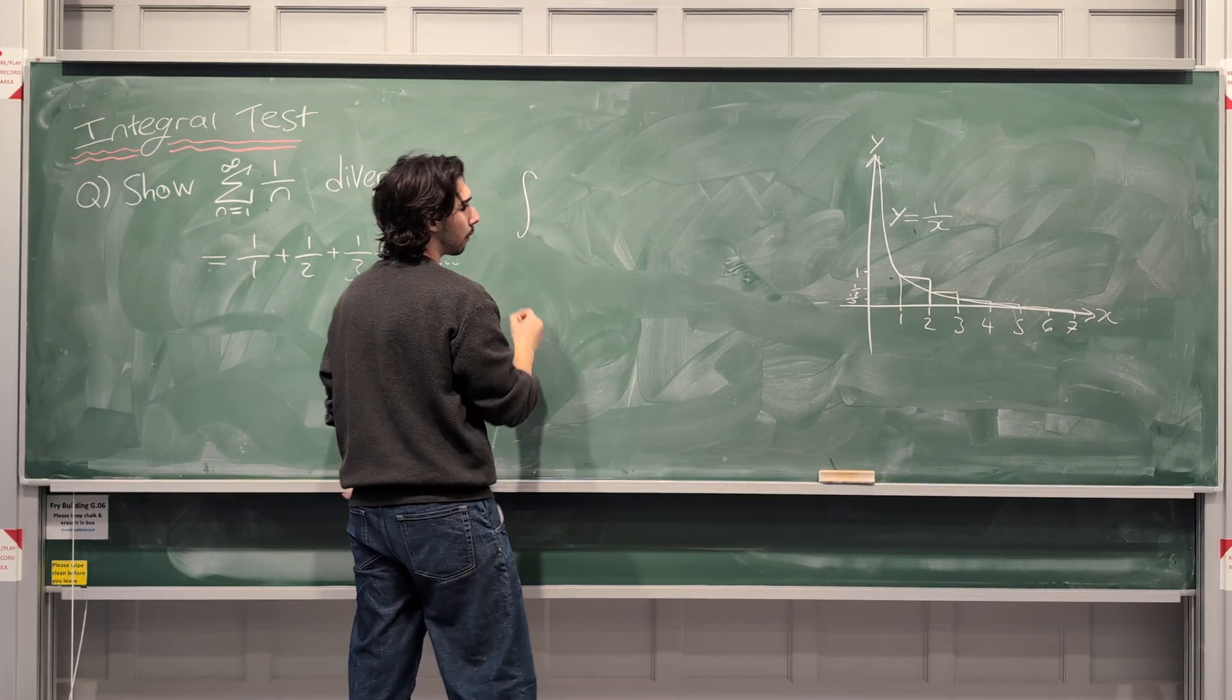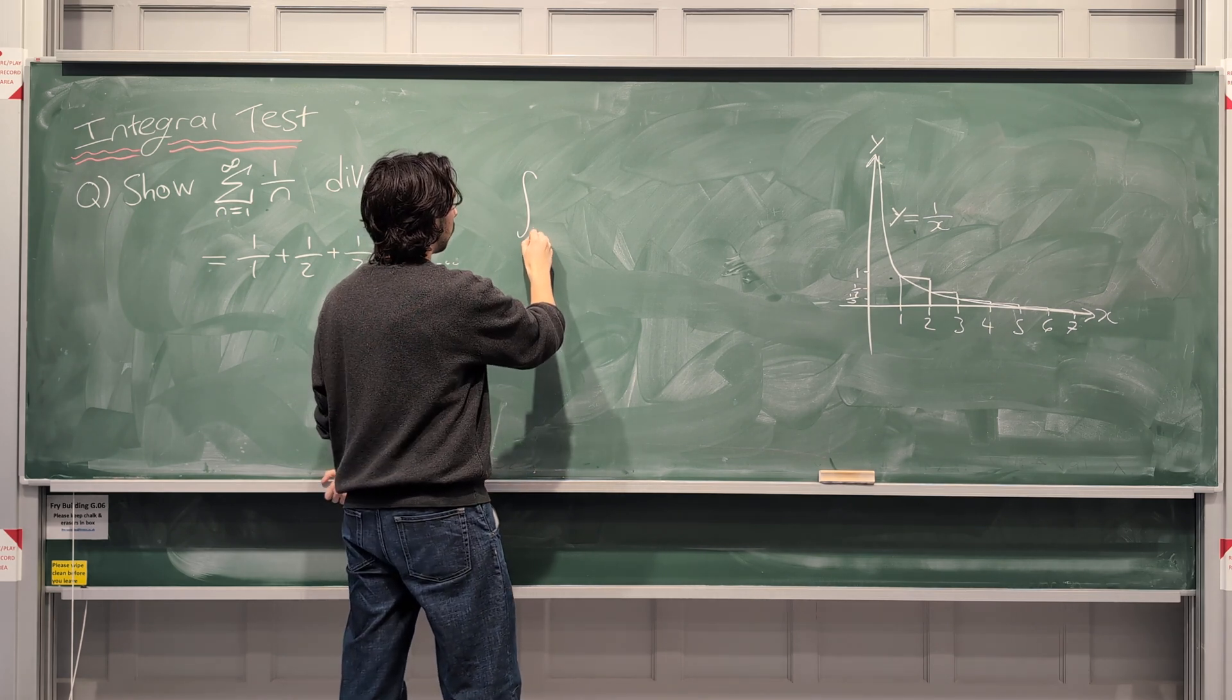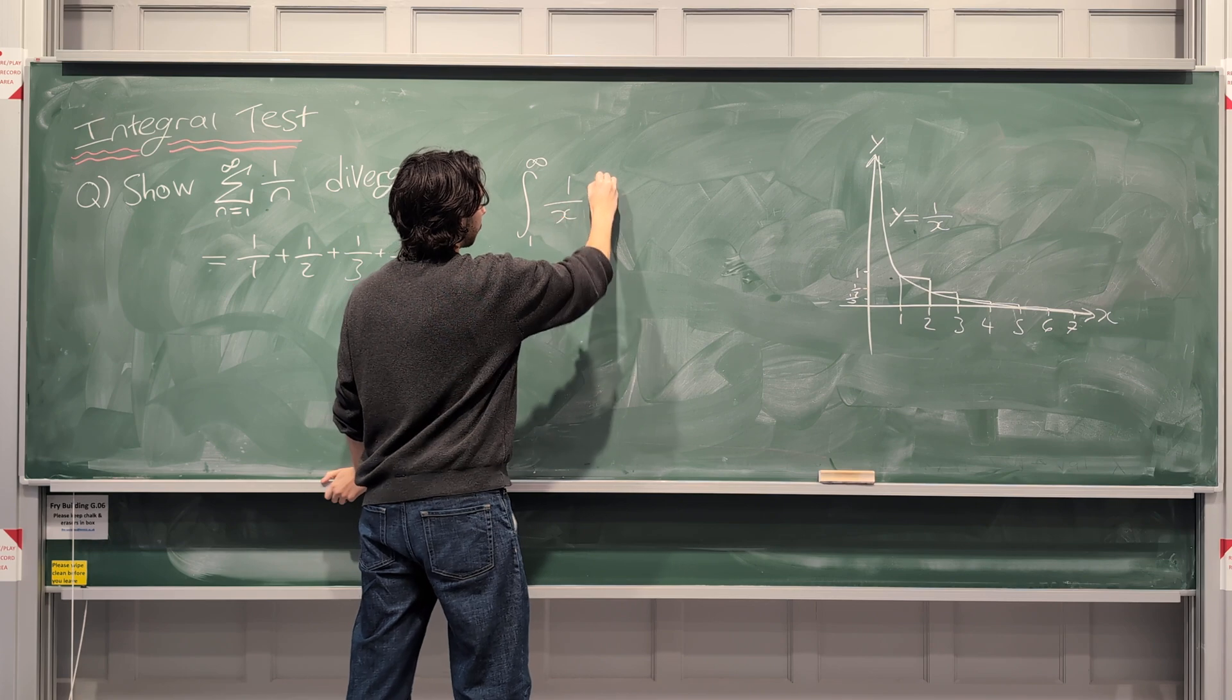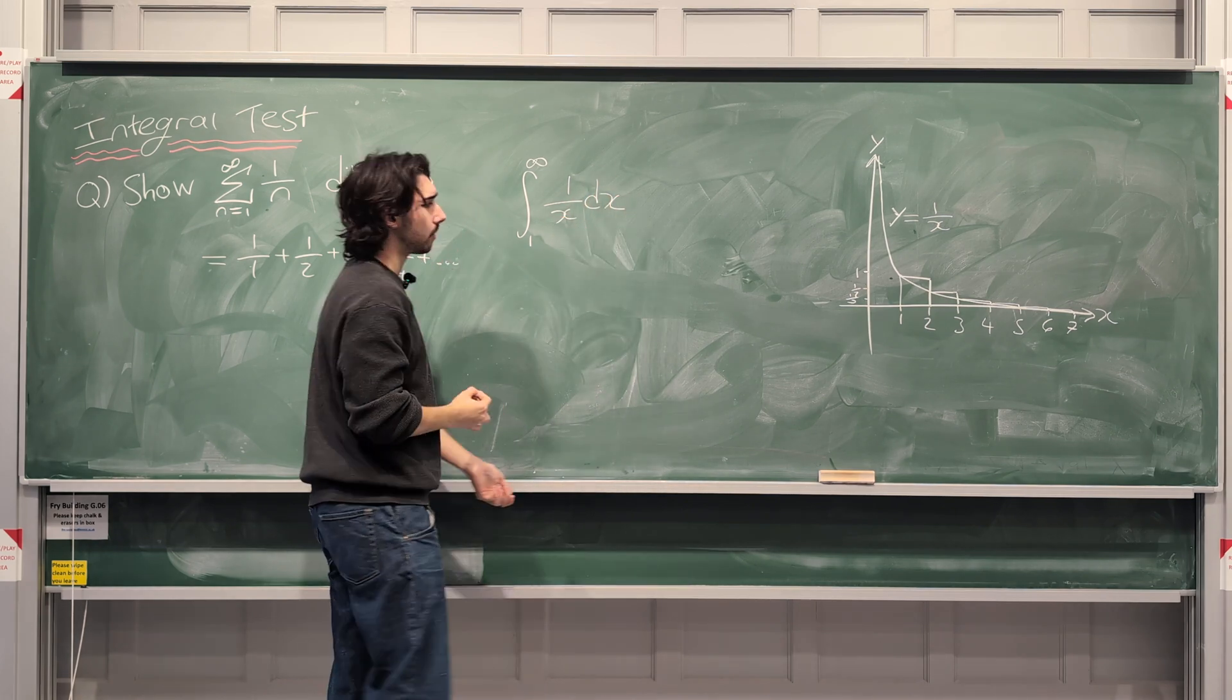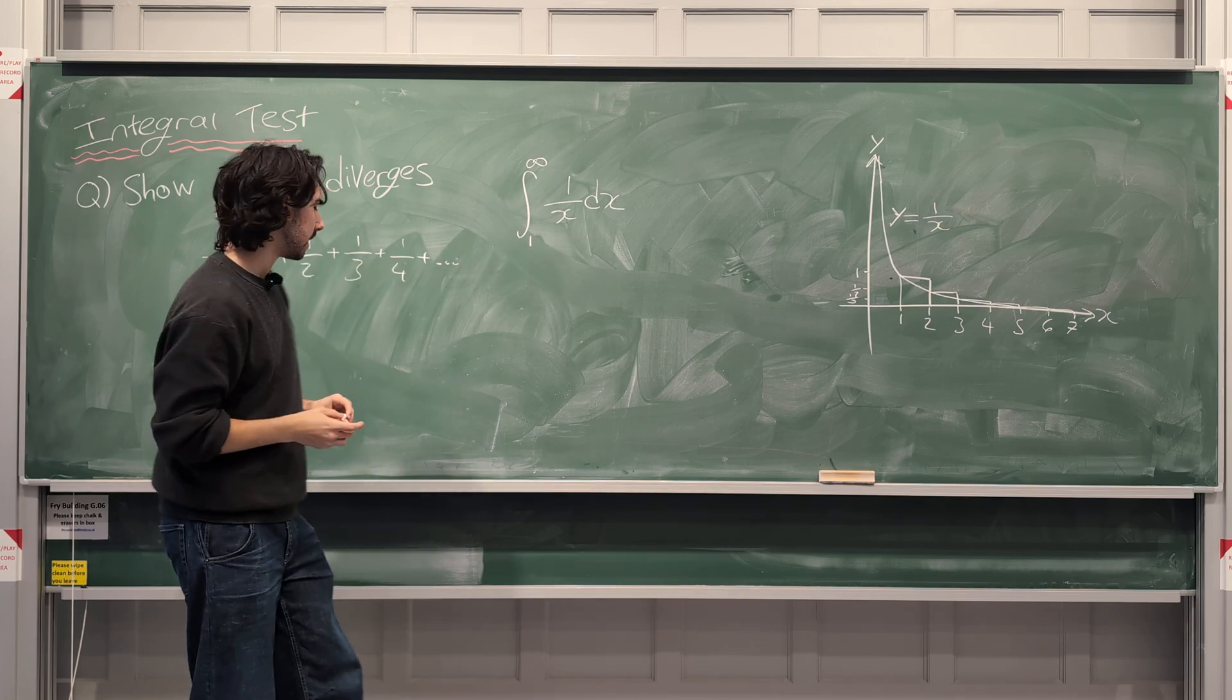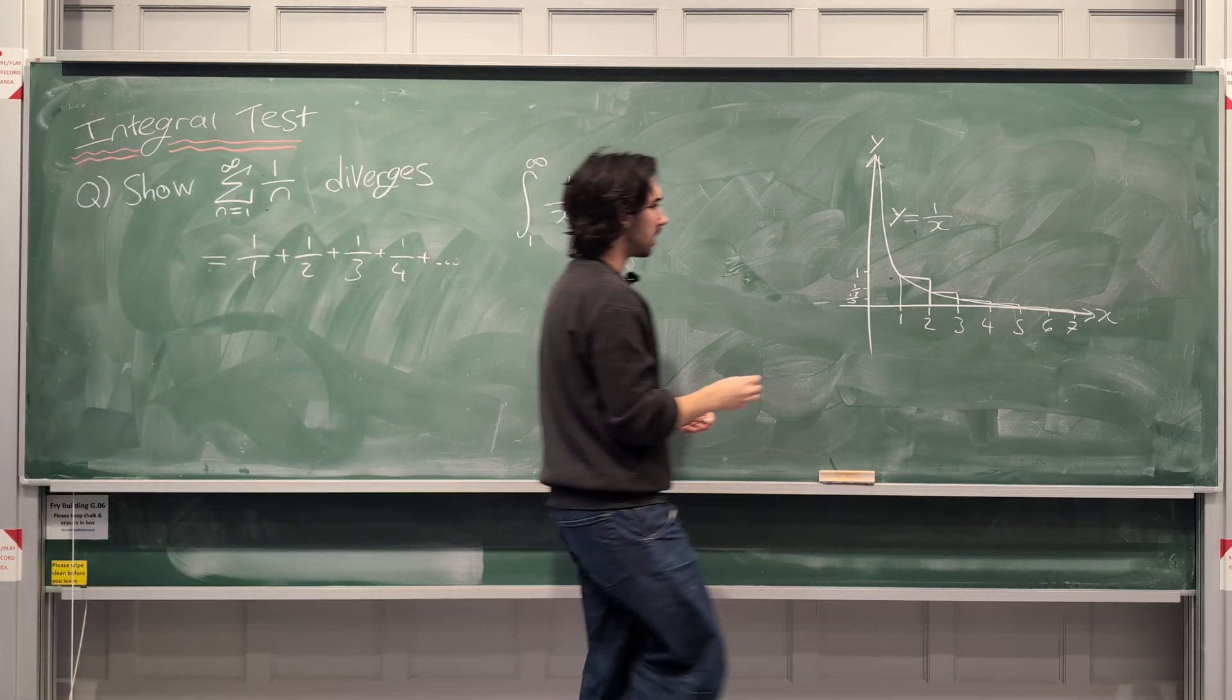What about the integral from, and again, I'll explain this in a little bit more detail in a second, but the integral from 1 to infinity of 1 over x dx. What about that? Well, think about it. What area in this graph is that representing?